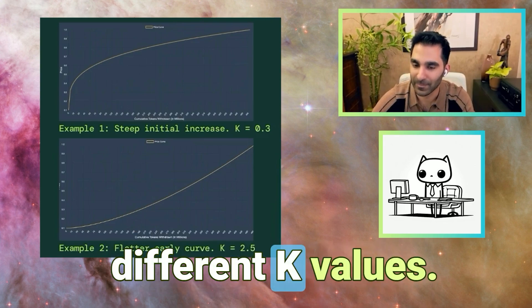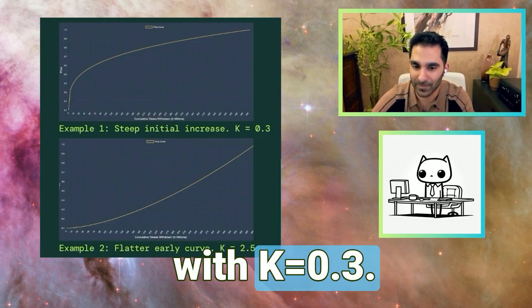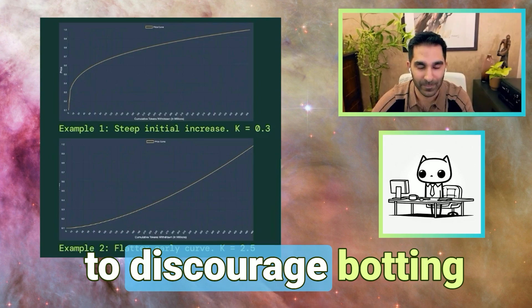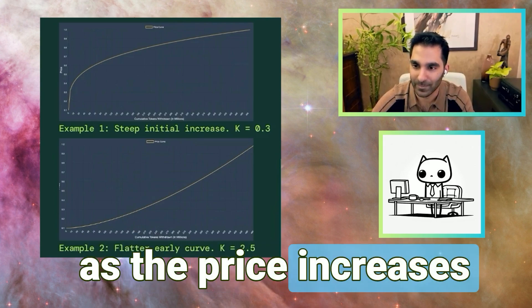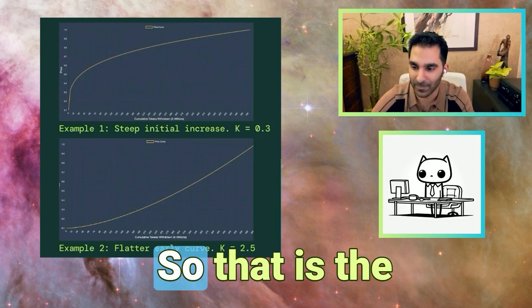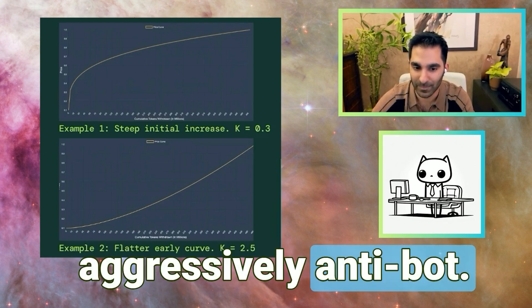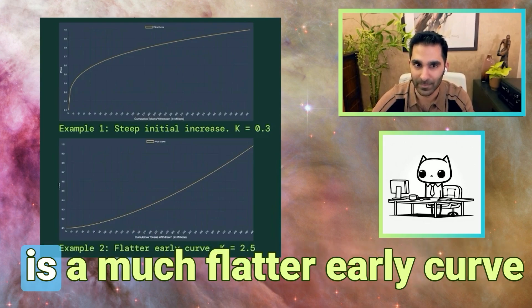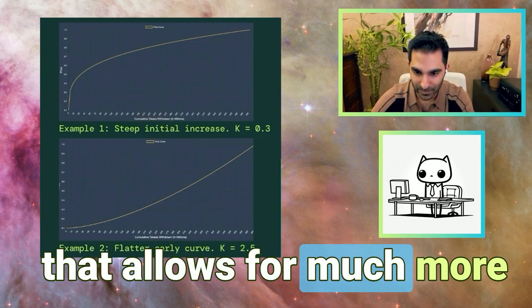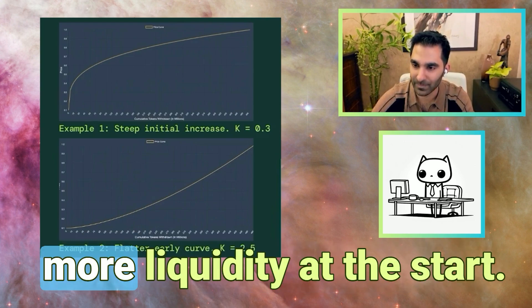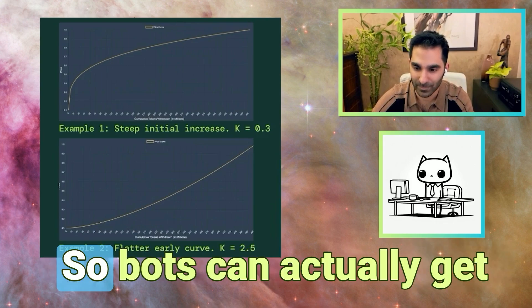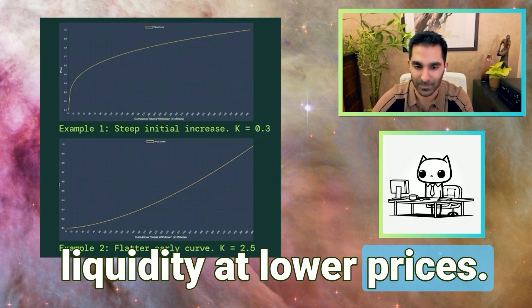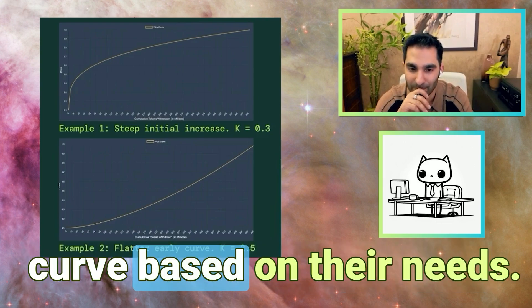We have two examples here with different K values. The first example with K equals 0.3 is a steep early curve, which is meant to discourage botting as the price increases very fast at the start — that is the aggressively anti-bot setting. The second example with K equals 2.5 is a much flatter early curve that allows for much more botting, as there is much more liquidity at the start and bots can get a lot more of the early liquidity at lower prices. Projects customize this curve based on their needs.